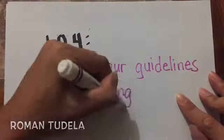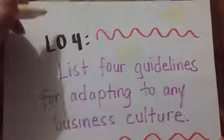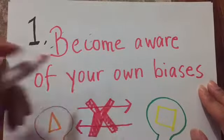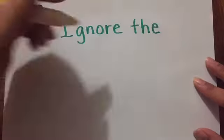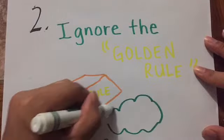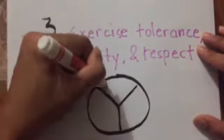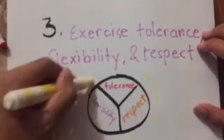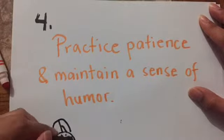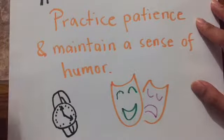In Learning Objective 4, we will list the four general guidelines for adapting to any business culture. The first is to become aware of your own biases — we must know our own culture and how we communicate. The second is to ignore the golden rule, as treating others as you'd like to be treated isn't applicable across cultures. Third, exercise tolerance, flexibility, and respect. The fourth guideline is to practice patience and maintain a sense of humor — stay calm when problems arise and act in a way that makes the other party comfortable.